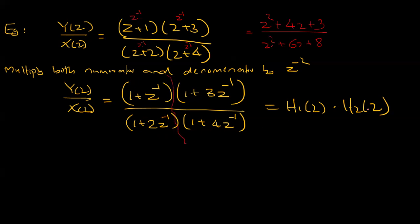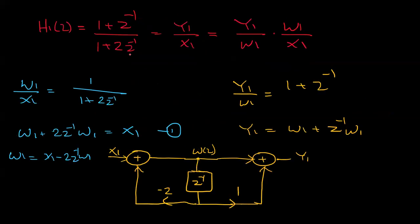We split H of z into h1 and h2. So h1 of z equals 1 plus z-inverse divided by 1 plus 2 z-inverse. Then y1 divided by x1 gives the output, with w1 as the internal state. And h2 of z handles the second section of the cascade.